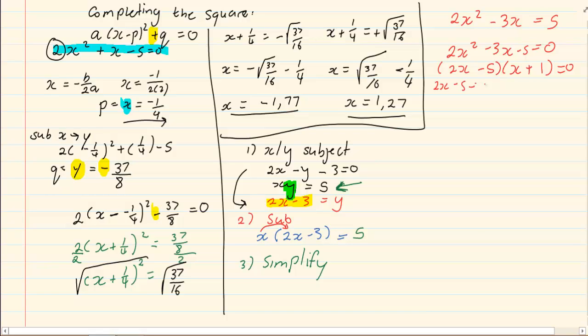So, 2x minus 5 is equal to 0, 2x is equal to 5, x is equal to 5 over 2.